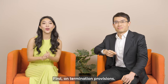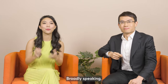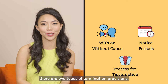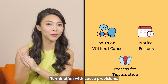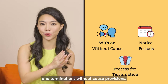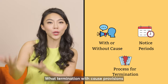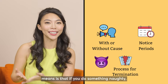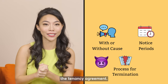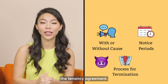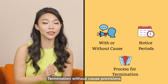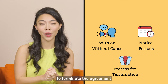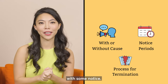First, on termination provisions. Broadly speaking, there are two types of termination provisions: termination with clause provisions and termination without clause provisions. Termination with clause provision means that if you do something naughty, either party can terminate the tenancy agreement. Termination without clause provisions allows both parties to terminate the agreement with some notice.